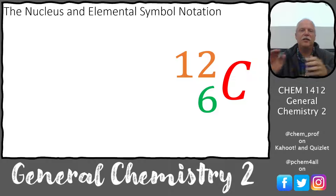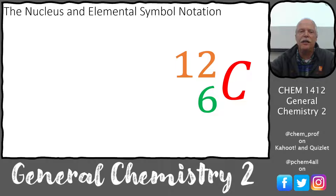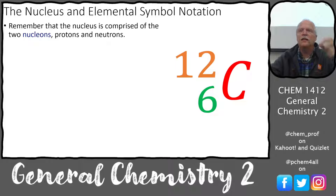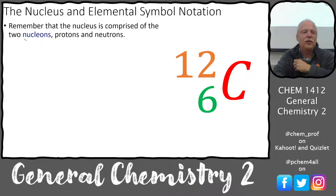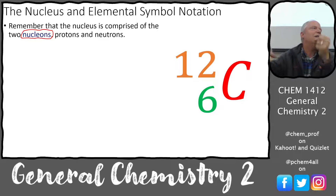Let's jump in. This is the nucleus and the elemental symbol notation. Remember that the nucleus contains two types of particles — this may be a new word for you — nucleons. That's just a particle that's in the nucleus. Those nucleons can be protons or neutrons, so that's a generic term for particles inside the nucleus.